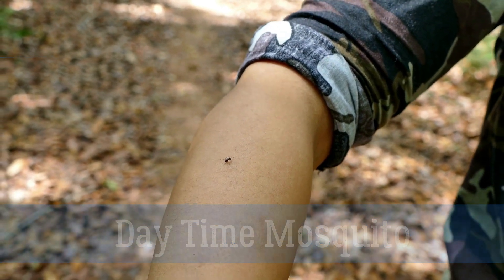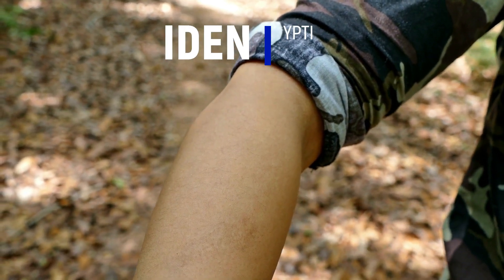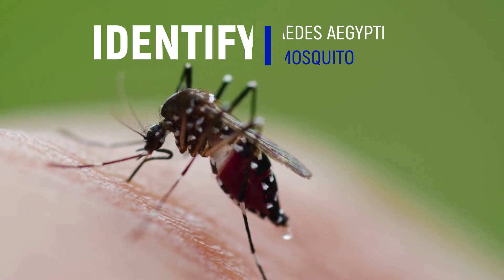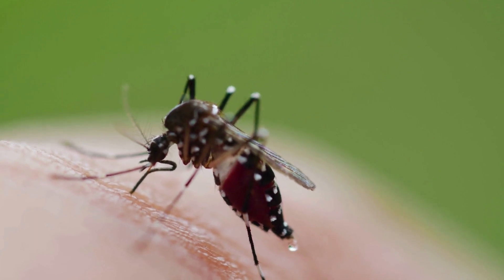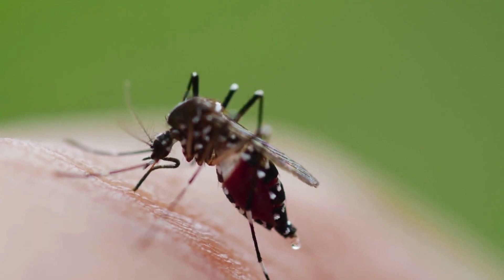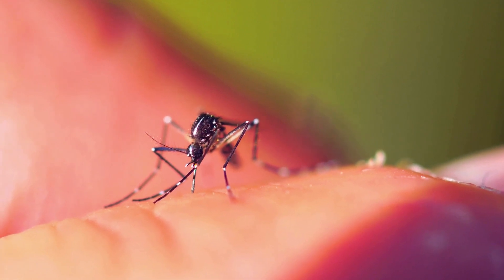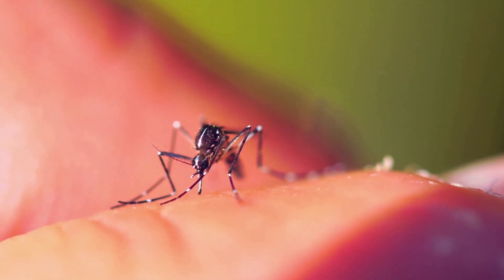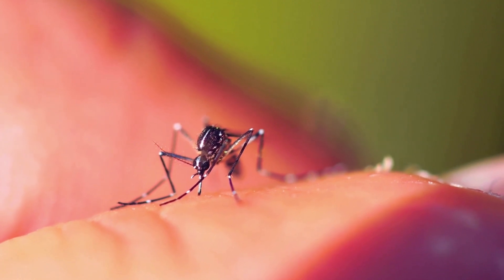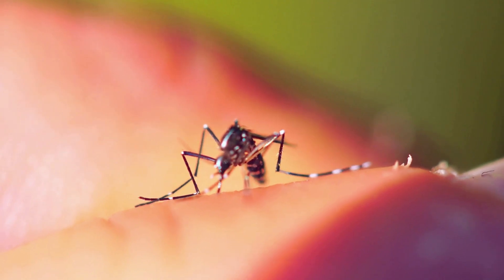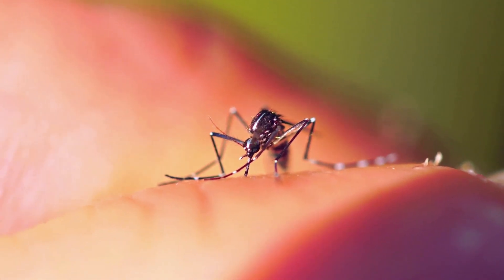Now, how to identify these Aedes mosquitoes? Normally, Aedes mosquitoes have a narrow and typically black body with unique patterns of light and dark scales on the abdomen and thorax. They have alternating light and dark scales — alternating white and black bands on the legs — and hence it is called the tiger mosquito, or we can say it has a zebra-type pattern.